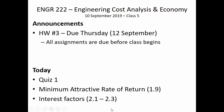We've just had our first quiz, and today we're going to be covering two different topics. The first is minimum attractive rate of return, which comes from Chapter 1 in the book. Then we're going to get into the interest factors in more detail — we've talked about it kind of tangentially so far, but we're going to really focus on it today.